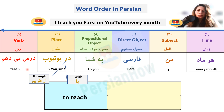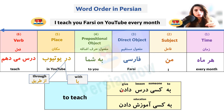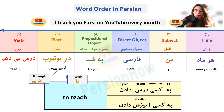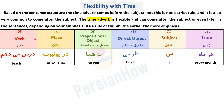The verb 'dars midaham' means 'to teach' — it comes from the infinitive 'dars dadan.' 'Dars' means lesson, 'dadan' means to give. 'Dadan' is a prepositional verb — the preposition is 'be,' as in we give to someone. So in Farsi we teach to someone: 'be kasi dars dadan.' We also have another verb: 'be kasi amuzesh dadan' — 'amuzesh' means education — which literally means to give education to someone.